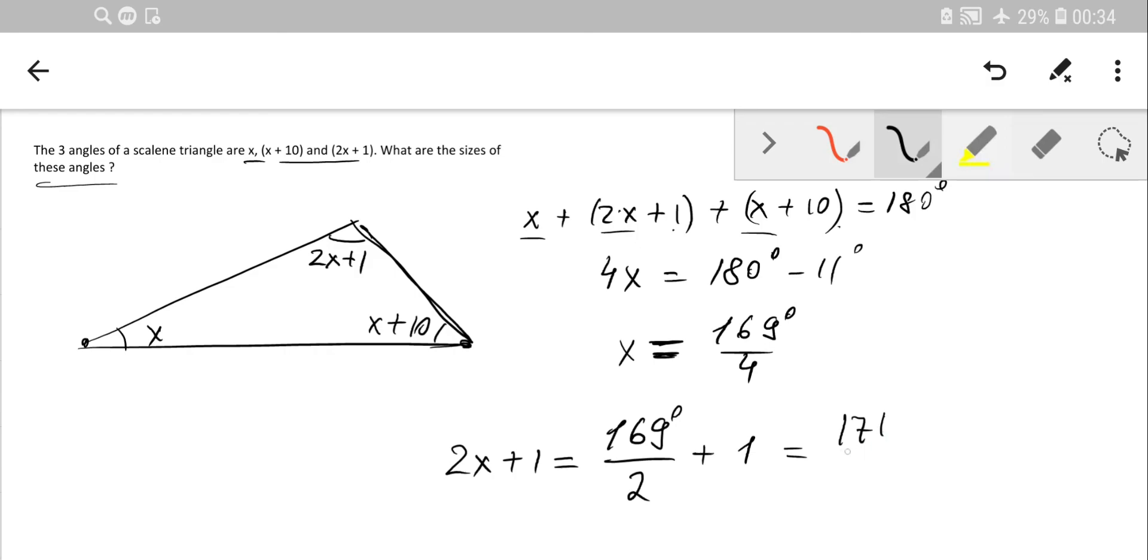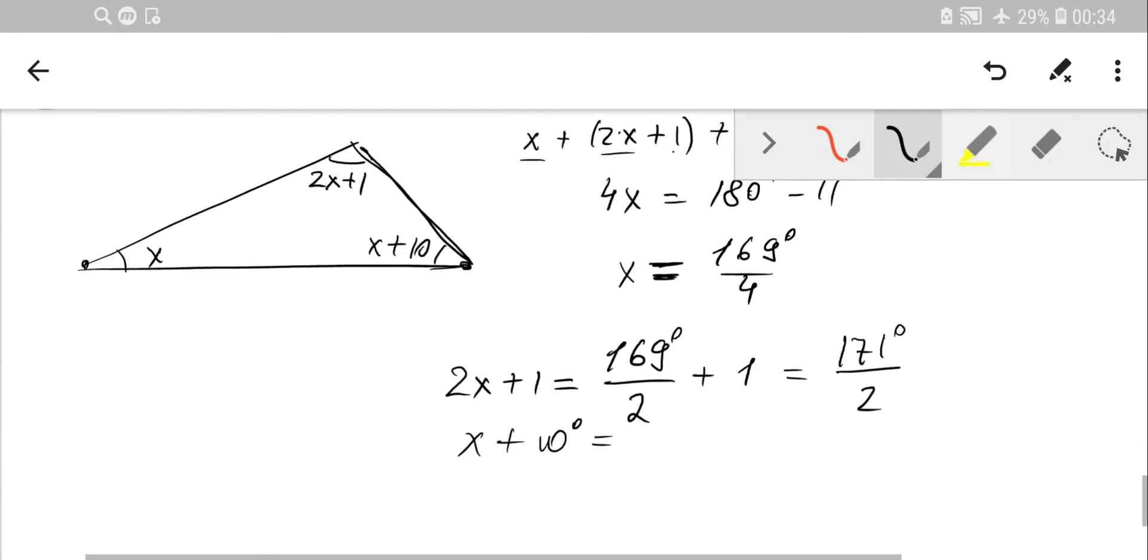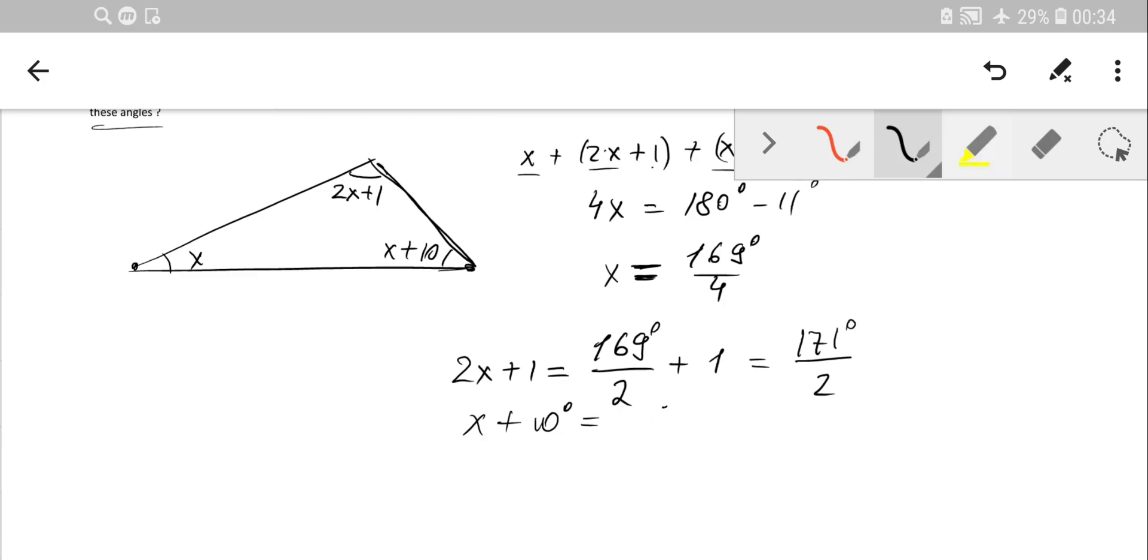And the last angle is X plus 10. Let's figure out the value. So just simply X plus 10, so we'll get 169 over 4 plus 10. So X plus 10 value is going to be 169 plus 40 over 4.